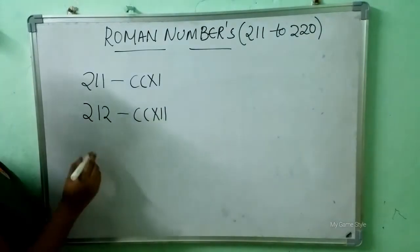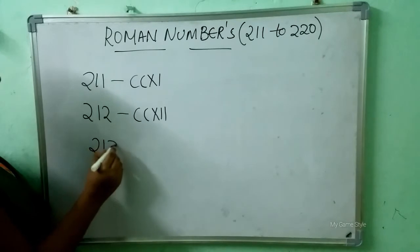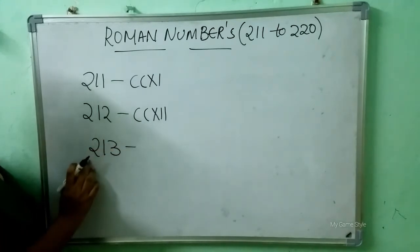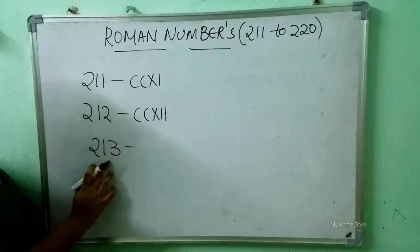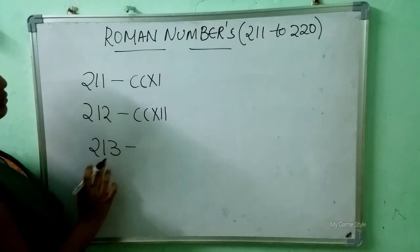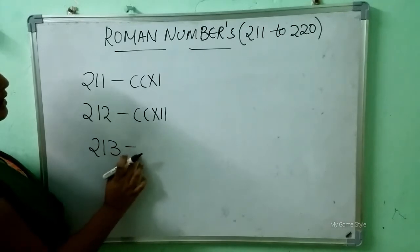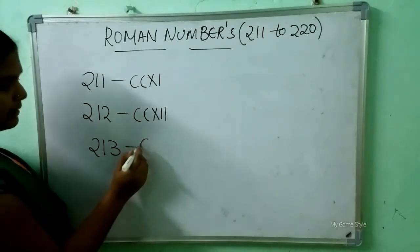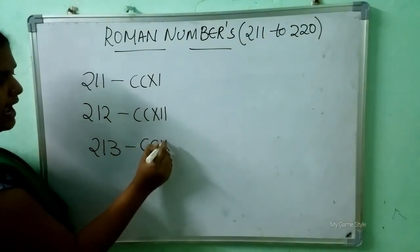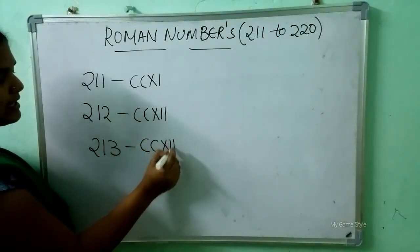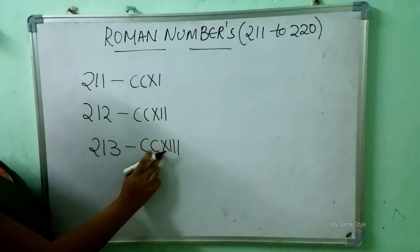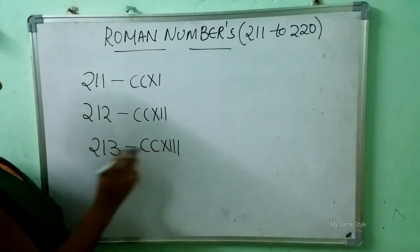After 212 comes 213. So how to write 213 here? Double C is 200, X, triple I is 13. So it means 213.